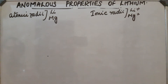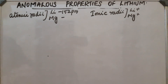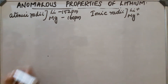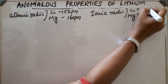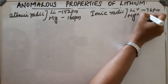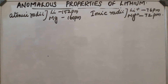The atomic radius of lithium is 152 pm and that of magnesium is 160 pm, which are almost similar. The ionic radius of lithium is 76 pm and that of Mg²⁺ is 72 pm. Since their atomic radii and ionic radii are almost similar, they show similarities.